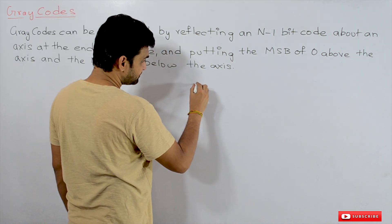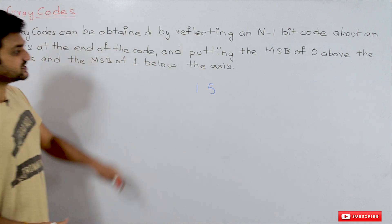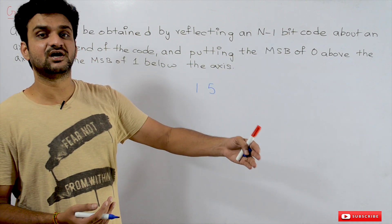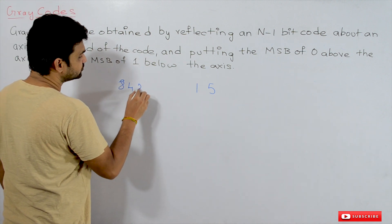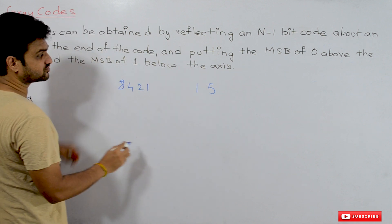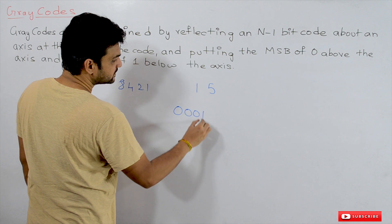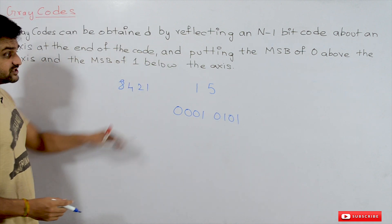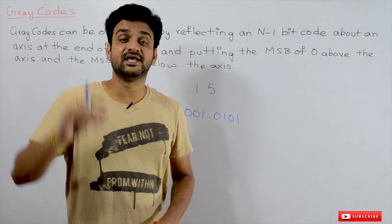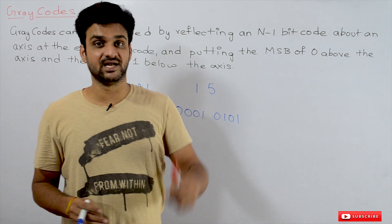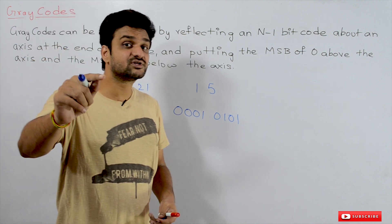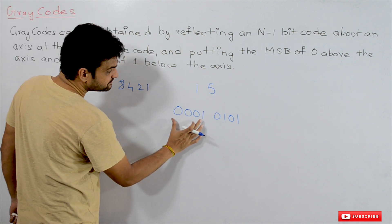For example, if you take the decimal number 15, to represent it in BCD using the 8421 coding mechanism, this is the way in which we represent it. The discussion about BCD codes was already made in our previous videos — if you haven't watched those, please watch them first. Every video in our channel is part of an entire course or playlist, and the link for the playlist is provided in the description below.